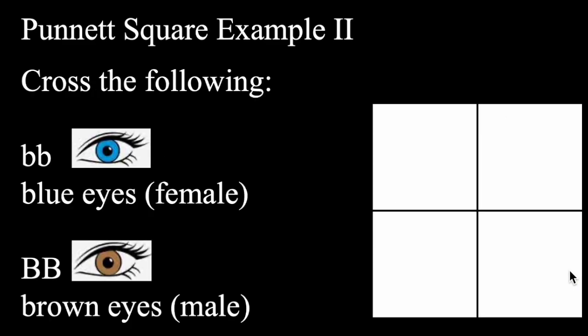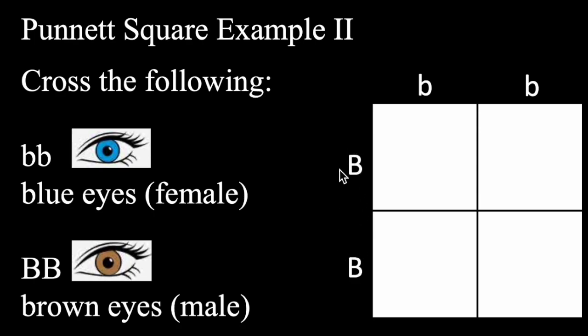For your second example, I'm going to cross two parents — a female with blue eyes and a male with brown eyes. The female with blue eyes is homozygous recessive, and the male with brown eyes is homozygous dominant. When crossing using Punnett squares, the female's alleles always go on the top, and the male's alleles always go on the left-hand side. I'm going to take the female's homozygous recessive traits and put them on the top, and the homozygous dominant male's alleles on the left-hand side, and cross these.